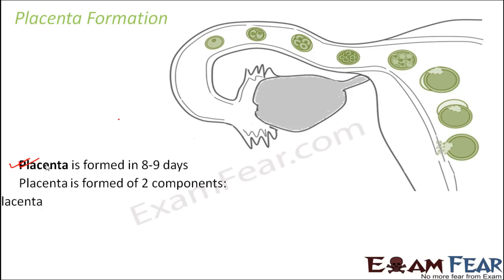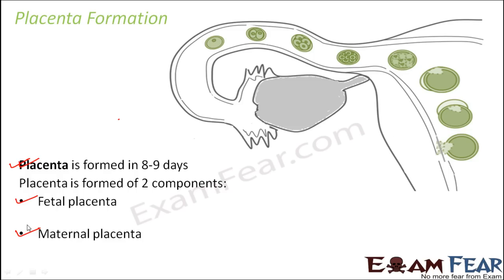A part of the placenta is formed from the fetal body and a part from the mother's body, and these two components join together to form what is called placenta. The fetal placenta is formed from the trophoblast or blastocyst — the outer layer of the blastocyst which attaches to the endometrium. That same outer layer gives rise to fetal placenta; some cells of the trophoblast form it.